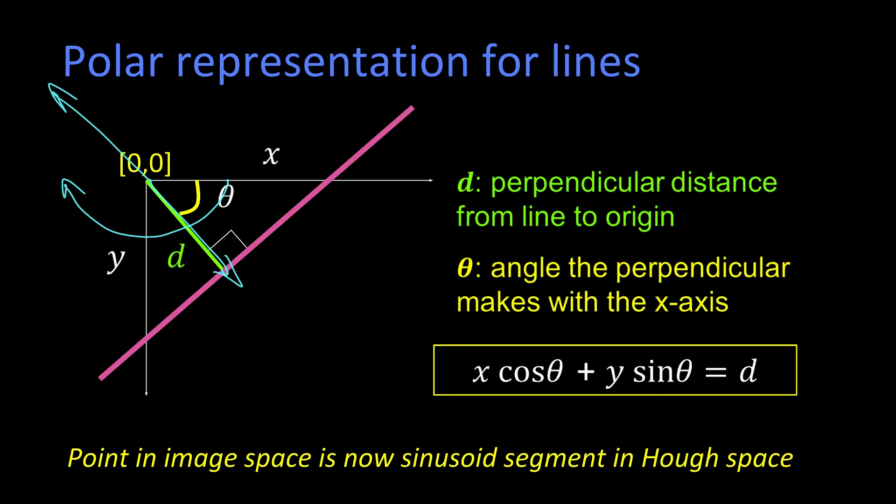Which way you do it doesn't really matter. In our algorithm we'll do it in a particular way, but there's just this trade-off: if you let d go positive to negative, then theta only has to go 0 to π.